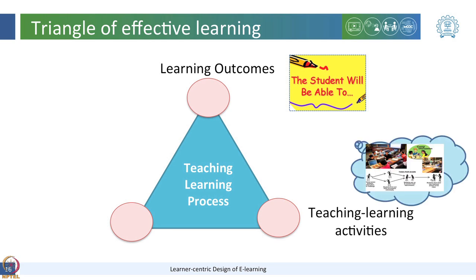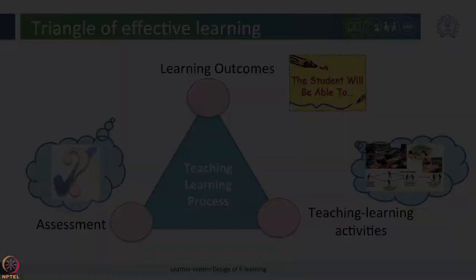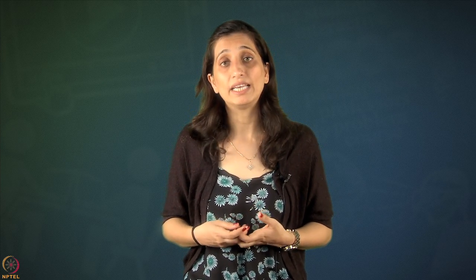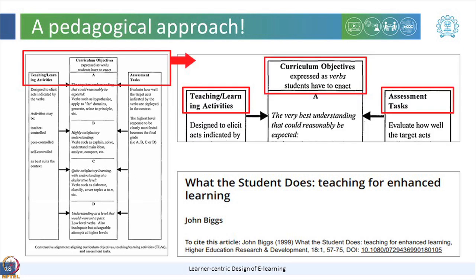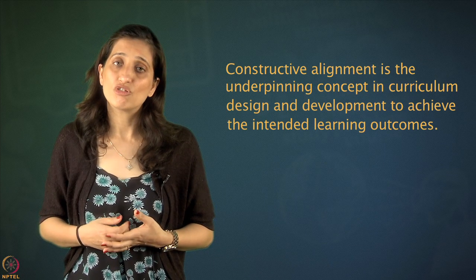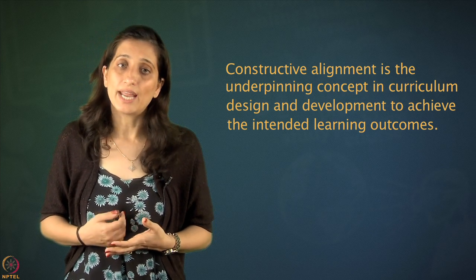Learning activities should also be designed to enable students to achieve these learning outcomes. Similarly, the assessment should be designed in alignment with the teaching and learning activities to measure students' learning and achievement of the intended learning outcomes. This golden triangle of learning outcomes, teaching and learning activities, and assessment constitutes constructive alignment — a pedagogical approach based on constructivism, defined in 1999 by John Biggs, who stated that constructive alignment is about defining learning outcomes and aligning them with teaching and learning activities and assessment tasks. This principle is the underpinning concept in curriculum design and development.